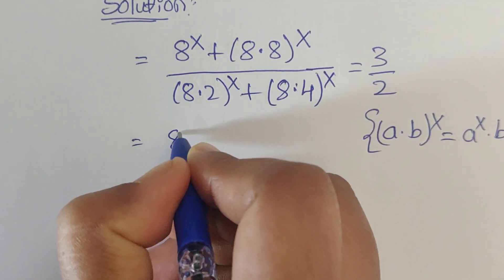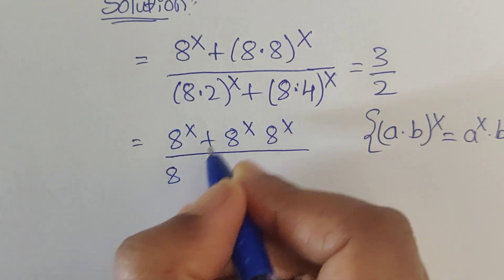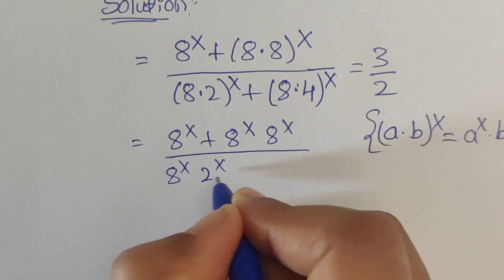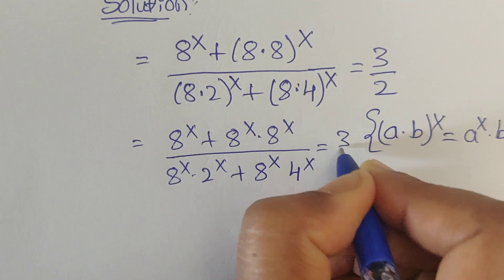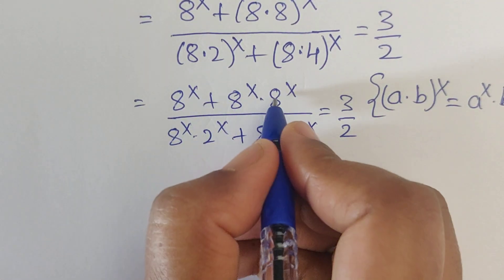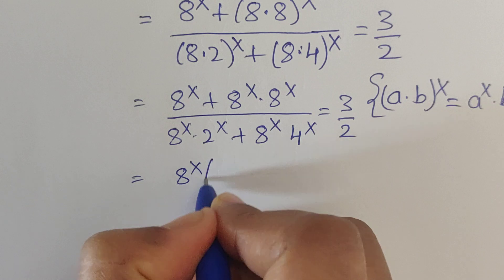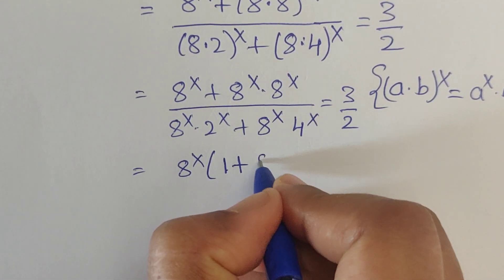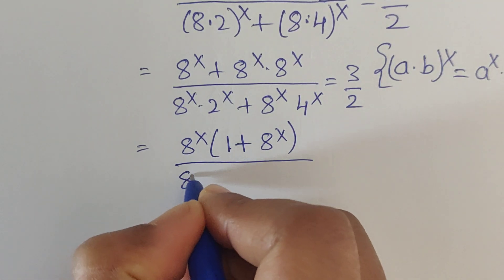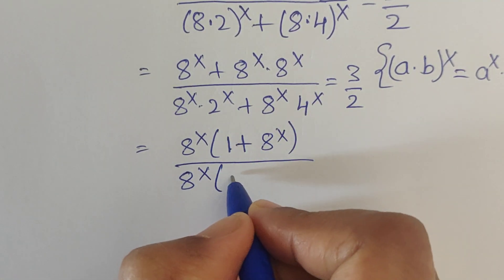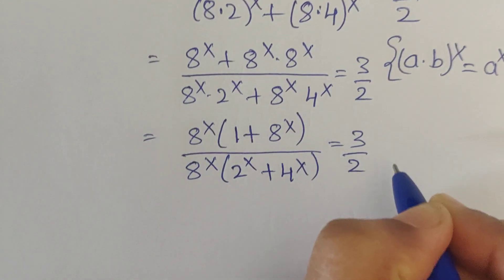Using this law, we can write 8^x plus 8^x times 8^x in the numerator, divided by 8^x times 2^x plus 8^x times 4^x. In the numerator we have a common factor of 8^x. We also take out 8^x in the denominator, and write the leftover numbers: 1 plus 8^x in the numerator.